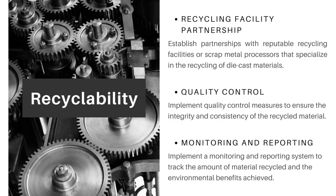How can recyclability of discarded products be executed? Firstly, industries can establish recycling facility partnerships with reputable recycling facilities or scrap metal processors that specialize in recycling die cast materials. These facilities have the expertise and equipment to process collected materials and extract recyclable metal. Next, quality control — implementing quality control measures to test and analyze materials to verify composition, mechanical properties and performance of the recycled metal, ensuring it meets required standards for use in the die casting process.